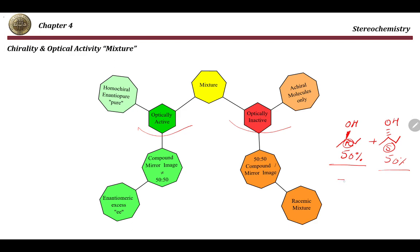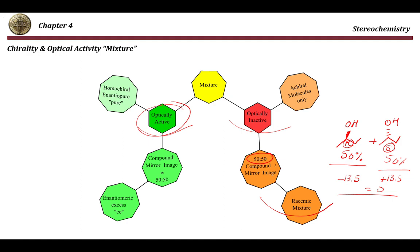In a 50/50 mixture of R and S enantiomers, the effect of one cancels the effect of the other. For instance, if one has a rotation of −13.5 and the other has +13.5, the net result is zero. Whenever you have a 50/50 mixture of a compound and its enantiomer, the mixture is optically inactive and is called a racemic mixture. If the mixture is optically active, it either consists of pure optically active compounds or the mixture is not 50/50.